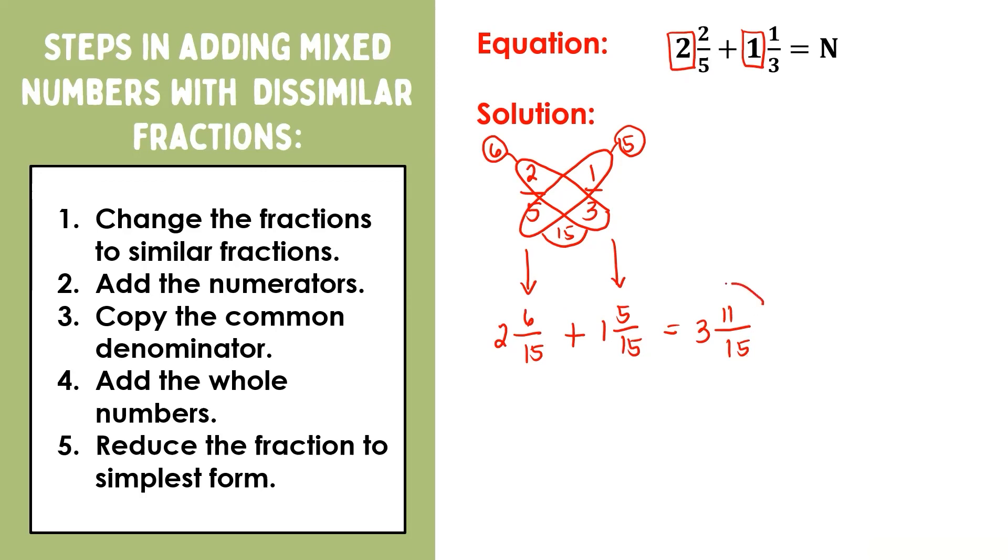11 and 15 has no common factor other than 1, that means the answer is already in its simplest form. Thus, 2 2/5 + 1 1/3 = 3 11/15.